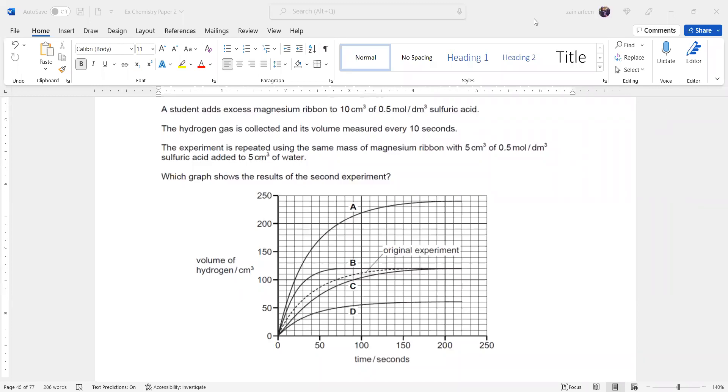In this question, student adds excess of magnesium ribbon to 10 cm³ of 0.5 mole per dm³ sulfuric acid. So the hydrogen gas was collected and its volume was measured every 10 seconds.